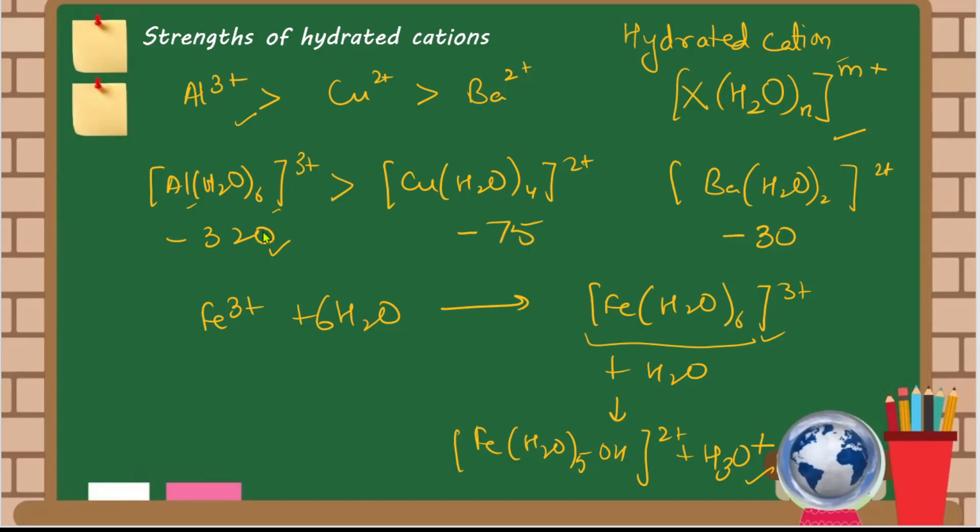This will break faster. And we will see that the charge is more, because it has more charge, the H₃O⁺ will release quickly. So H₃O⁺ will release faster for aluminium than copper and barium.